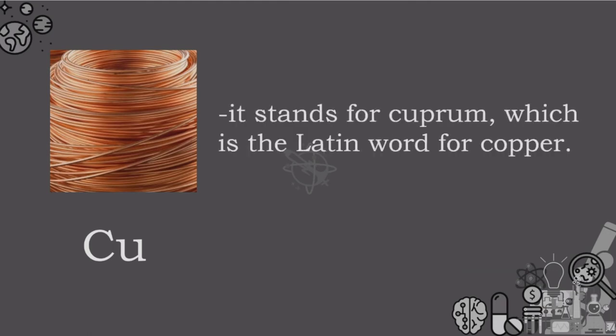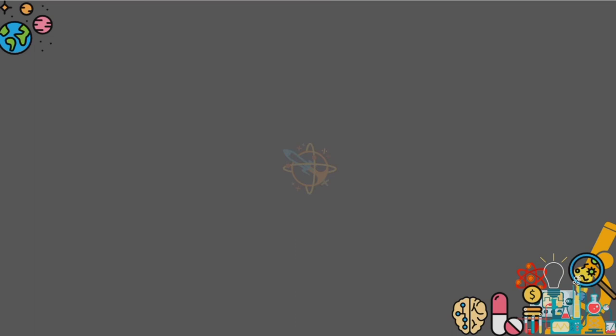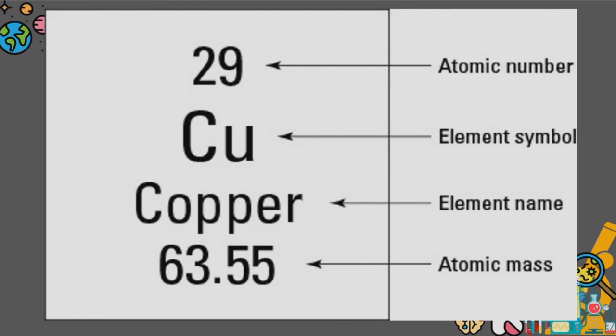The number above its symbol in the table is its unique atomic number. And the lower number with a decimal point represents the atomic mass of the element.